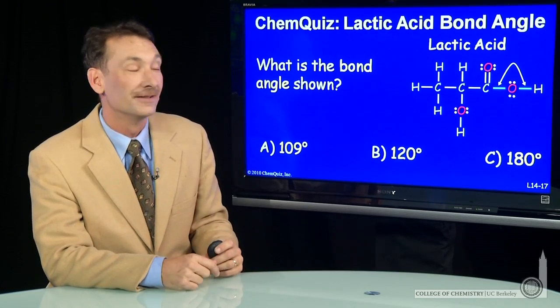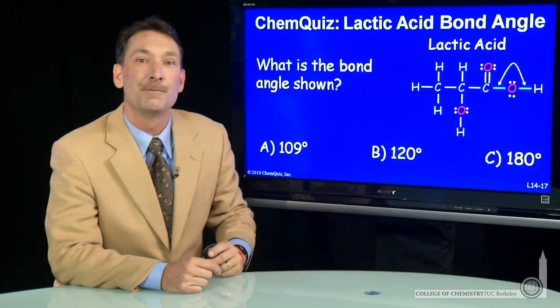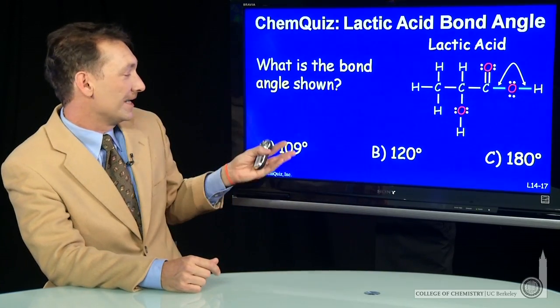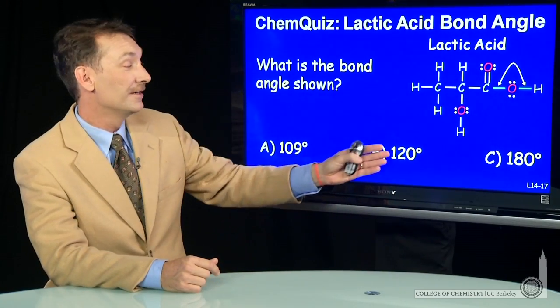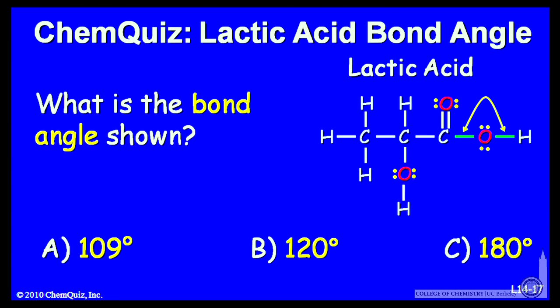Let's look at some bond angles in lactic acid. Here's lactic acid, and the carbon-oxygen-hydrogen bond angle is of interest here. Is that 109 degrees, 120 degrees, or 180 degrees? Think about that for a minute and make a selection.